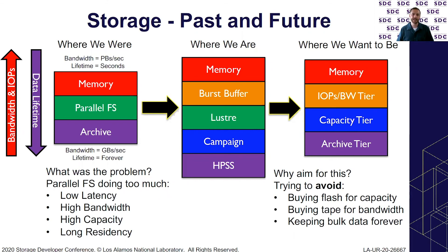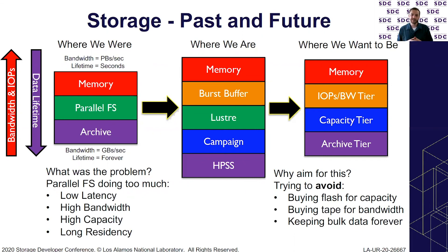We also want to avoid keeping data sets forever if users don't necessarily need them forever. Our experience is that once users store something to the archive, they tend not to ever clean it up unless forced to do so. That's why this capacity campaign tier is in there — to give them a stable storage location that is not the permanent archive. It has been largely successful in alleviating archival data pressure.